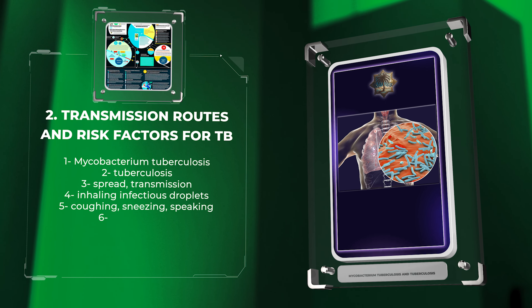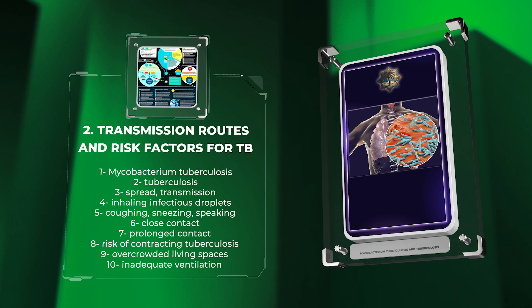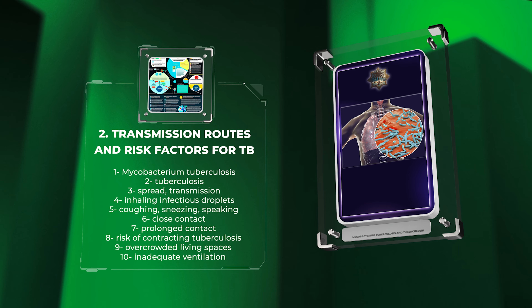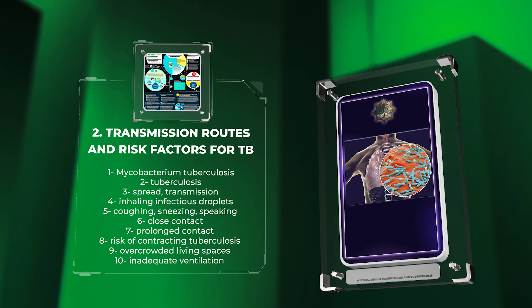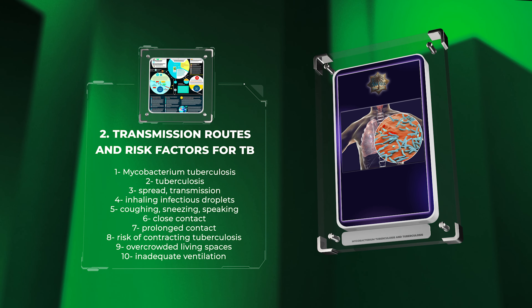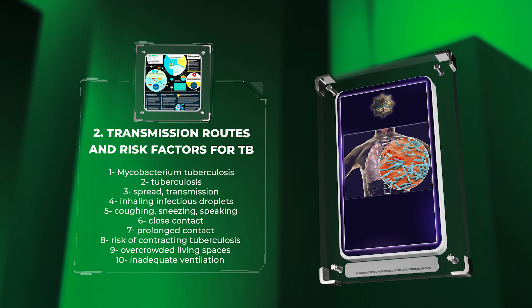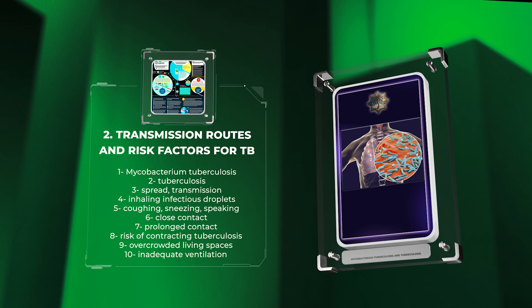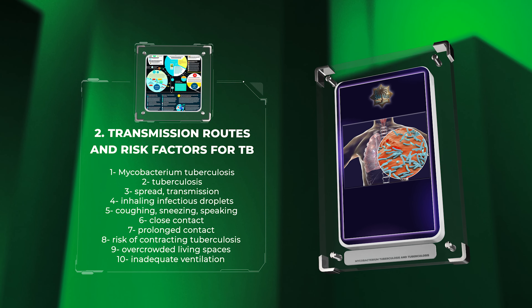We will now discuss how Mycobacterium tuberculosis, the bacterium causing tuberculosis, spreads and the factors that increase the risk of developing the disease. The primary mode of transmission is through inhaling infectious droplets released by an infected individual when coughing, sneezing, or speaking. Close and prolonged contact with an infected person also heightens the risk. Conditions such as overcrowded living spaces, inadequate ventilation, malnutrition, and weakened immune systems further increase susceptibility to the disease.